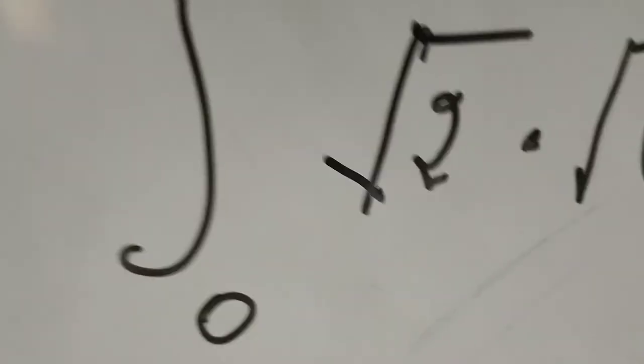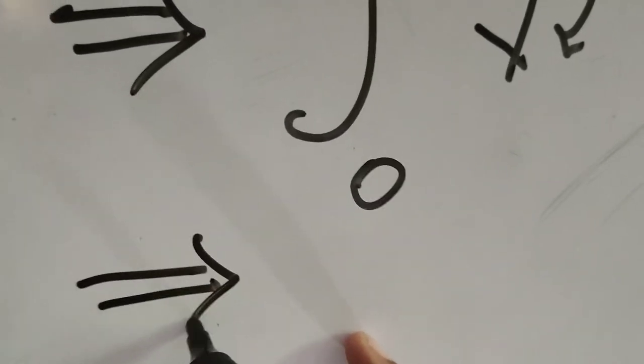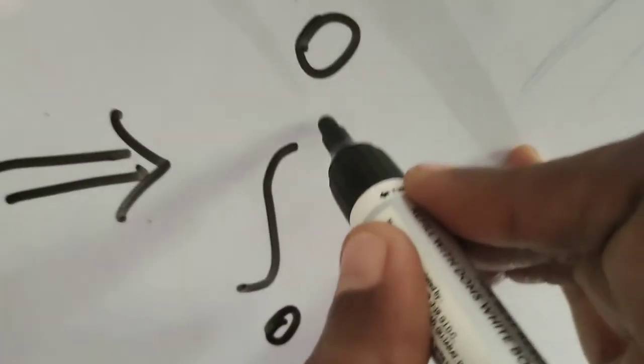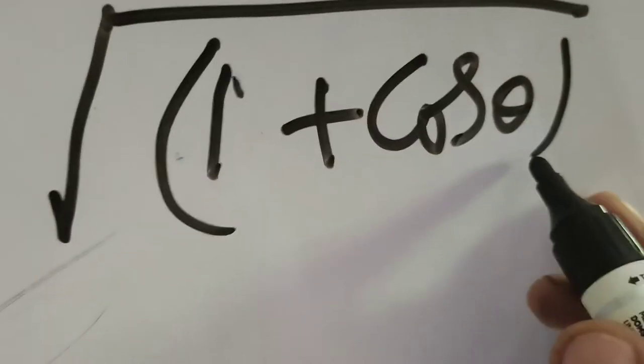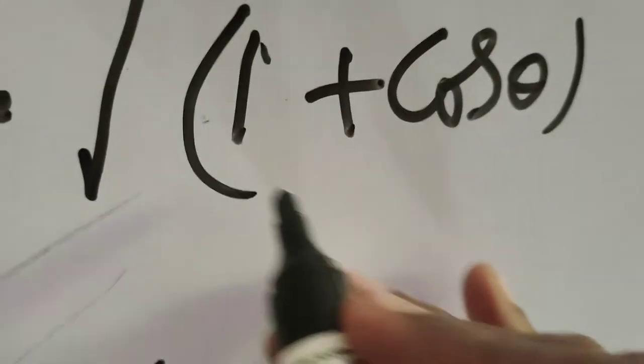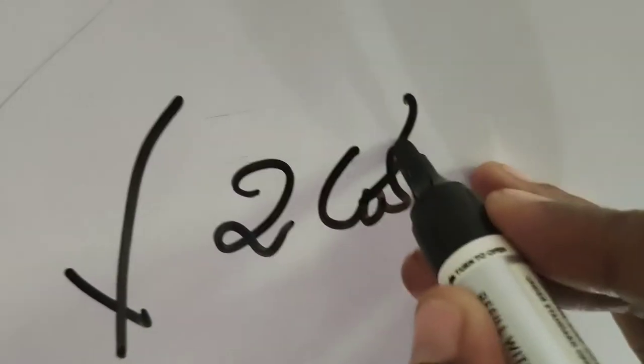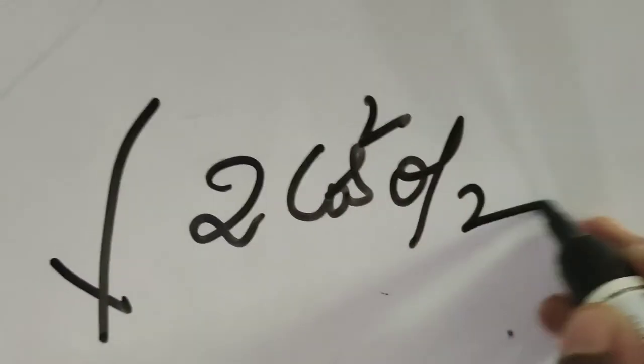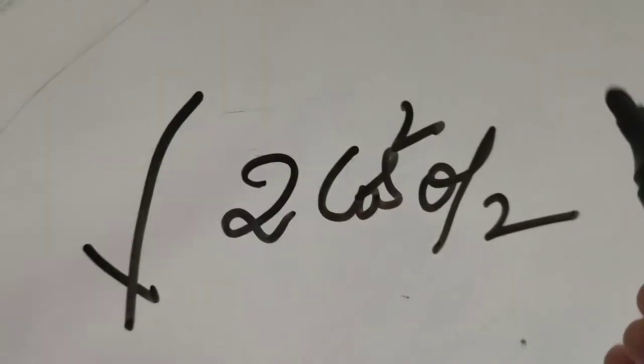That implies: integral from 0 to π of √2 into √(1 + cosθ). Now, 1 + cosθ, according to the trigonometric formulae, equals 2cos²(θ/2). This is the formula for compound angles in trigonometry.